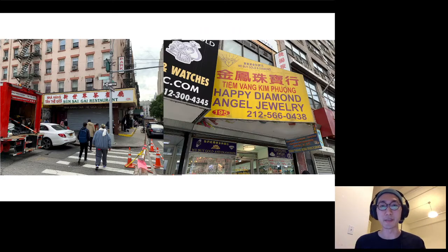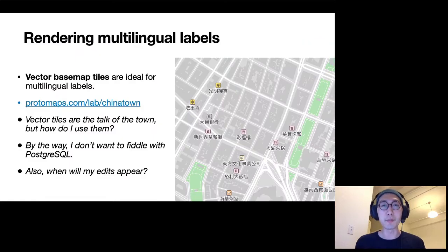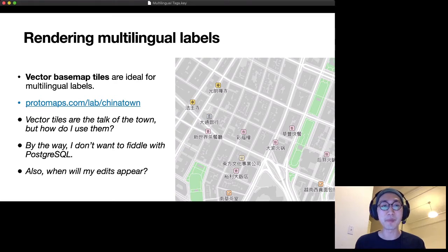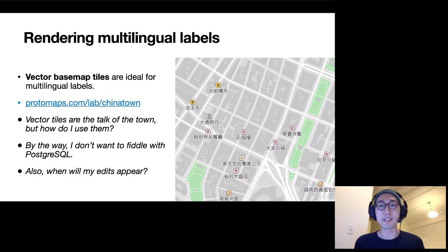There are also cases where there are three languages on one sign, so you can add even a Vietnamese tag. For rendering multilingual labels, I think vector-based map tiles are ideal. Vector tiles are really great, but how do you use them? I don't want to use Postgres — it's complicated to set up — and also how fast do edits appear? These are major problems that are common with vector tiles.